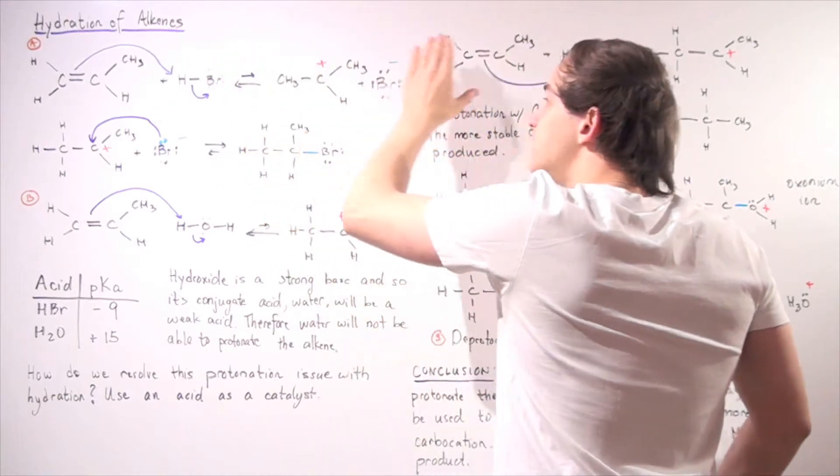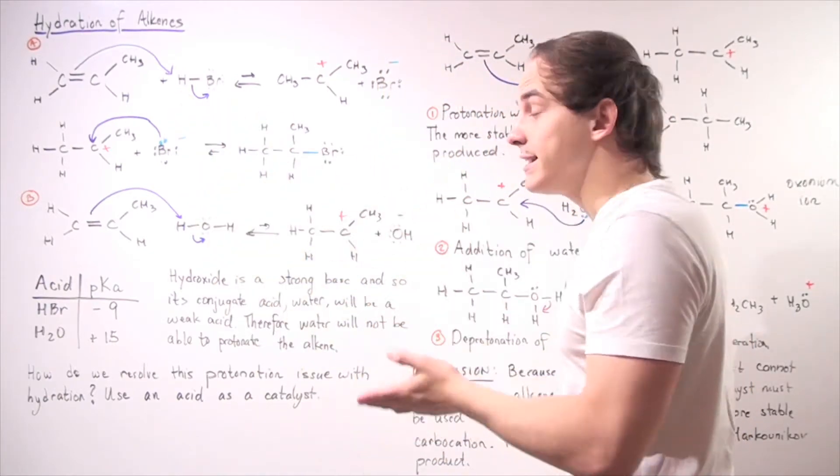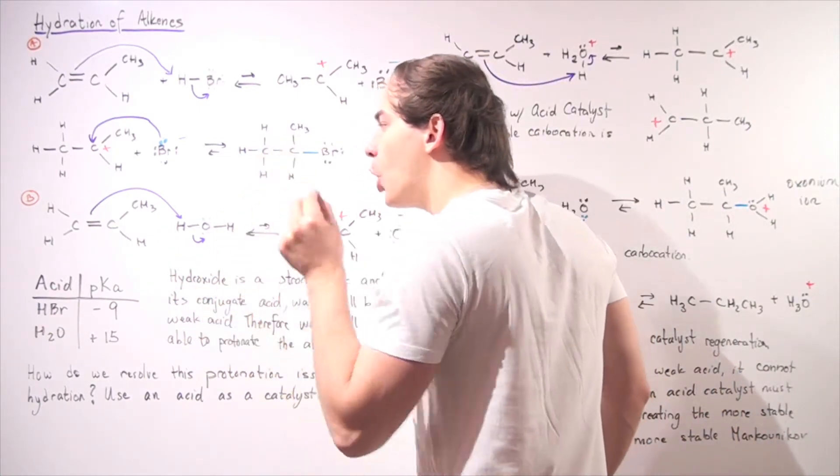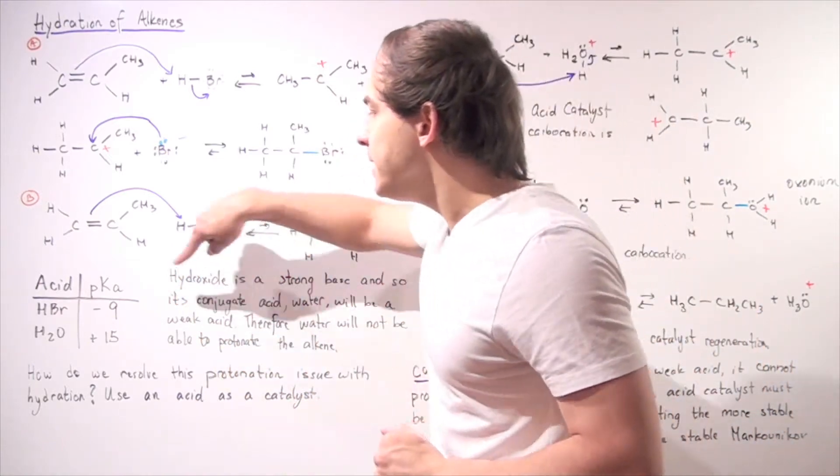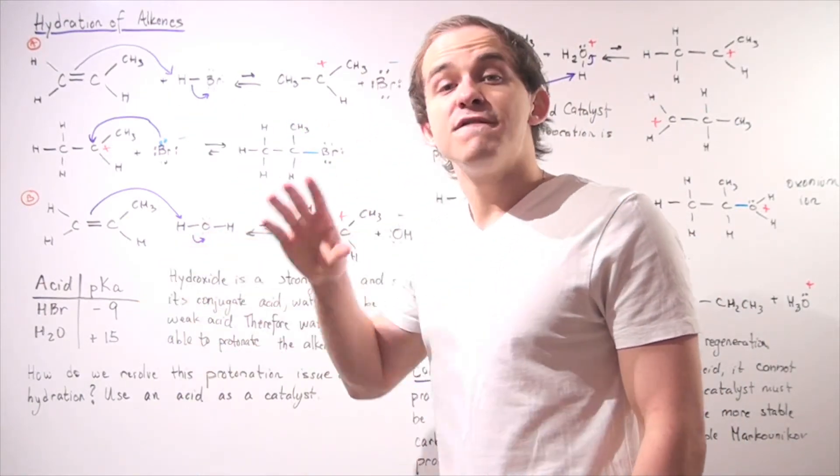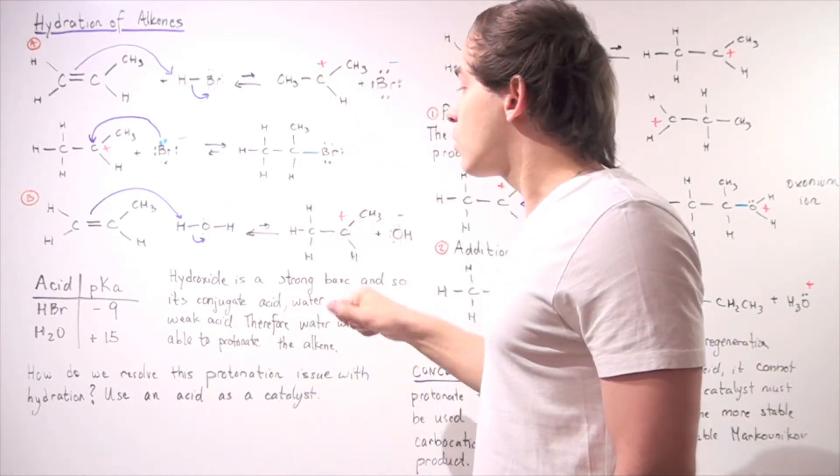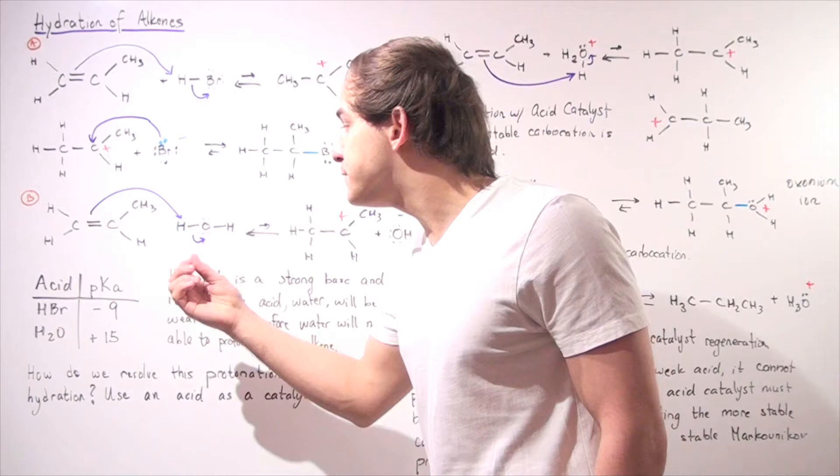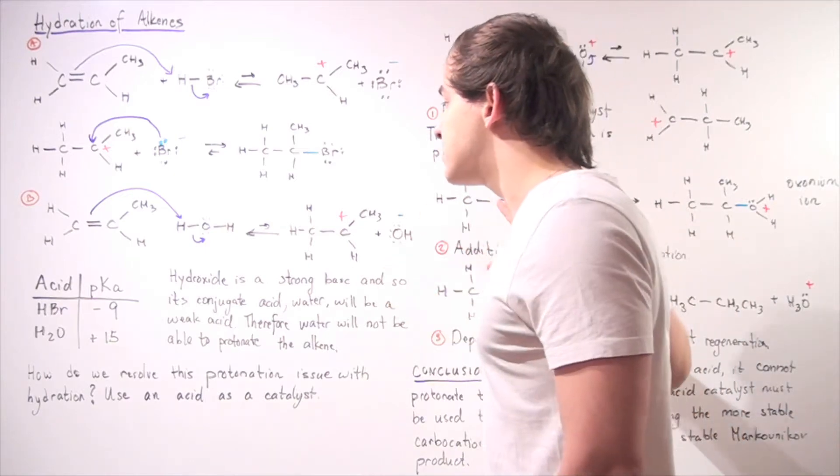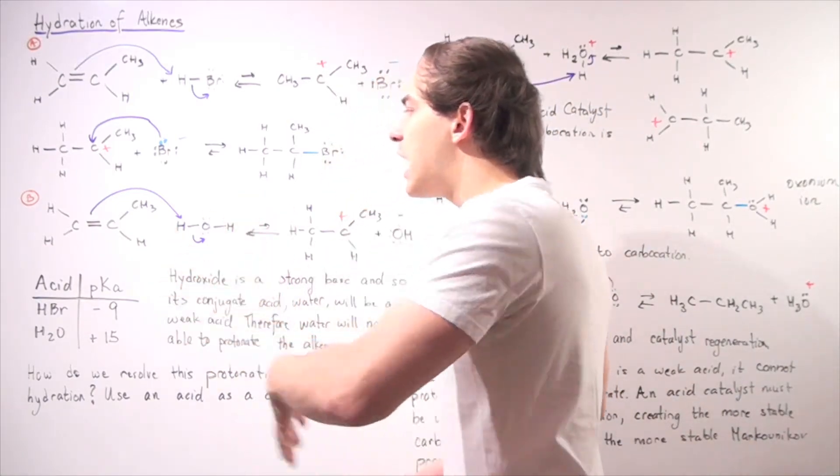So this reaction takes place readily because this is a very good acid and it's able to donate that H ion. On the other hand, since this is a very strong base, this is a relatively weak acid and it will not readily donate this H ion. Now if we look at the pKa of these two acids, notice that the pKa of HBr is negative 9. That's a very good number. So that means this will be a very good acid. Remember, the lower the pKa, the better our acid. Now water has approximately positive 15 pKa and that's a very high pKa, relatively high pKa. And so that means this protonation step will not take place readily because this water molecule will not protonate this alkene at a very good rate.